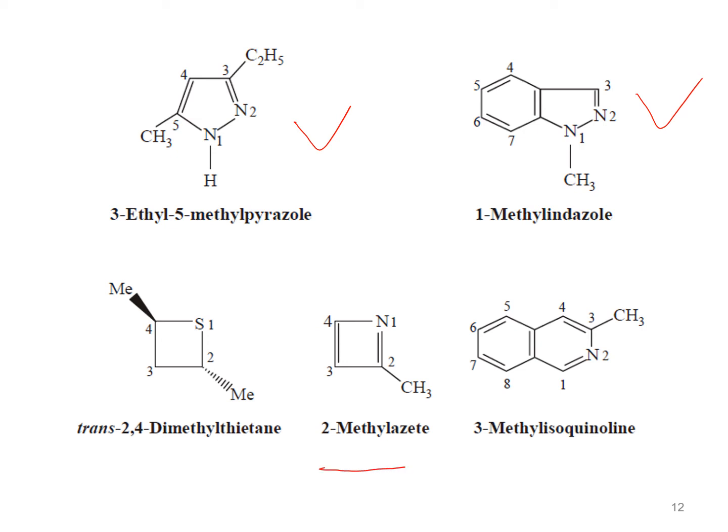In this compound we can see it is the derivative of azete, also named by the Hantzsch-Widman system, with a methyl group at position two. So the name of this compound is 2-methylazete. This compound is the derivative of isoquinoline — a traditional trivial name — with a methyl group at position three, so it is named 3-methylisoquinoline.